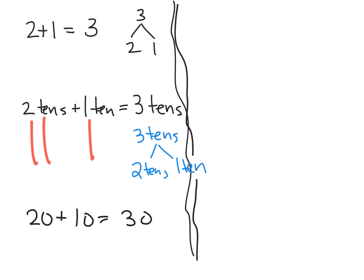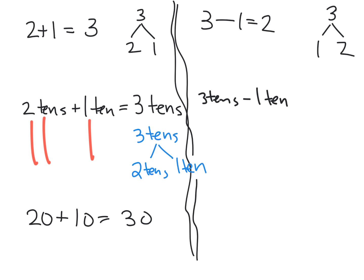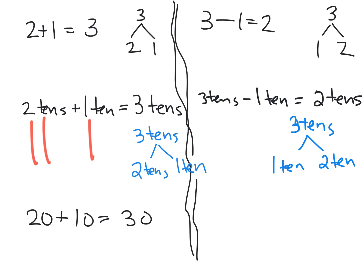Along the same lines, we can do it with subtraction. Let's say we've got three minus one, and that equals two. The number bond would show three with a one and a two. For the units method, we'd have three 10s take away one 10, and the answer is two 10s. So our number bond would show three 10s at the top, with one 10 and two 10s as the parts.